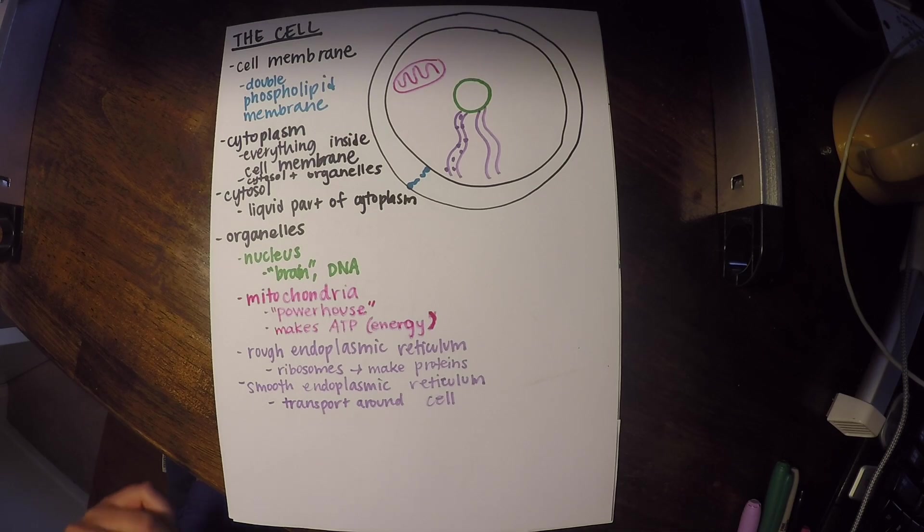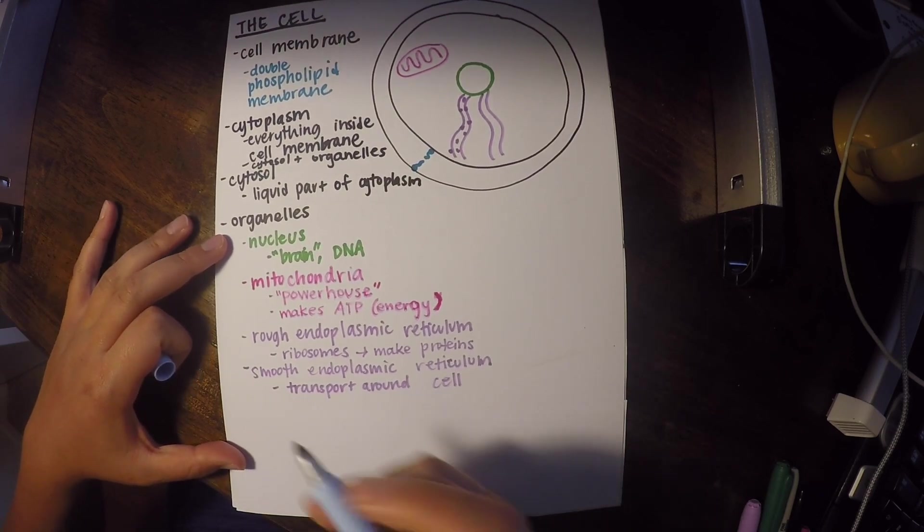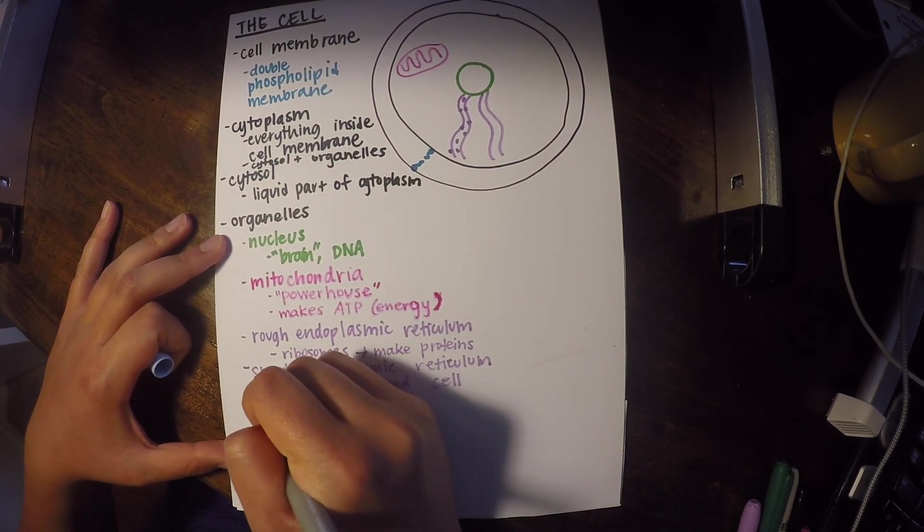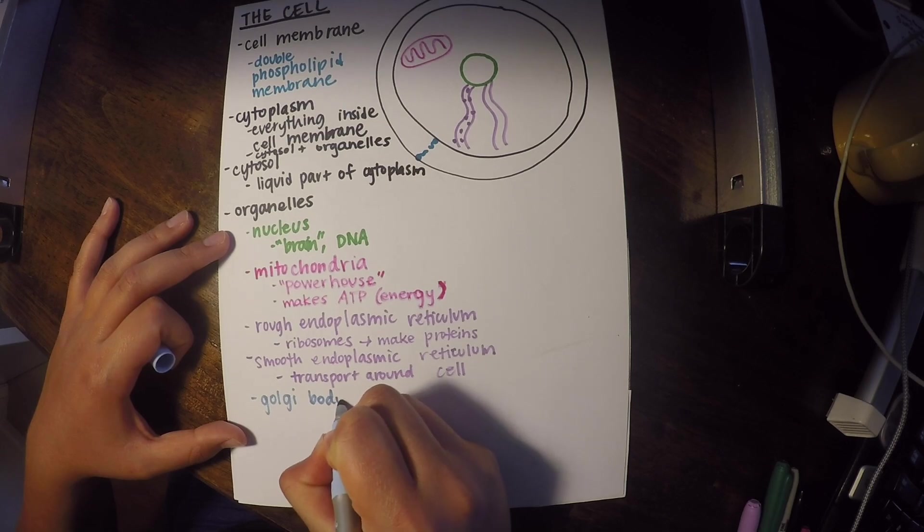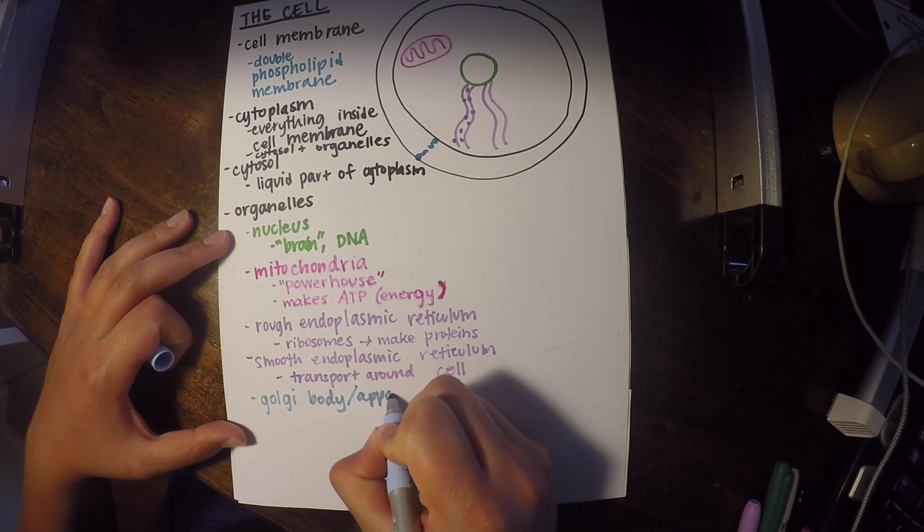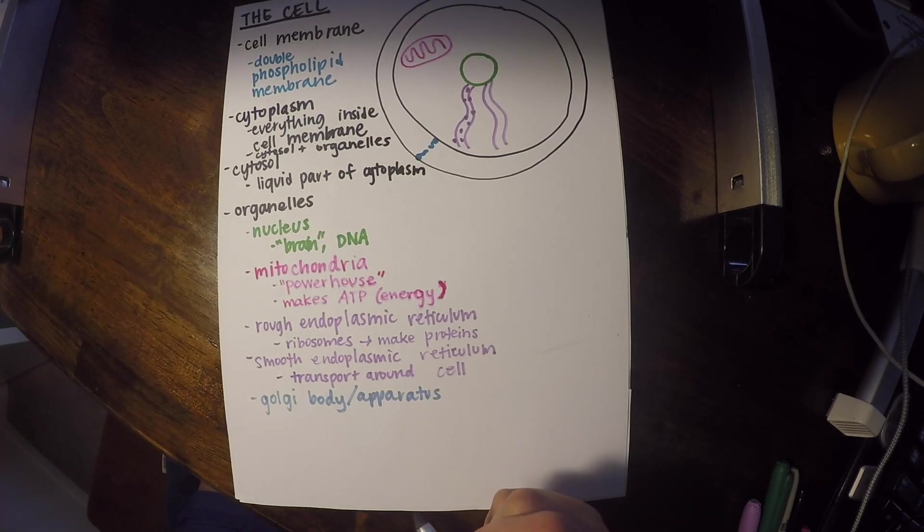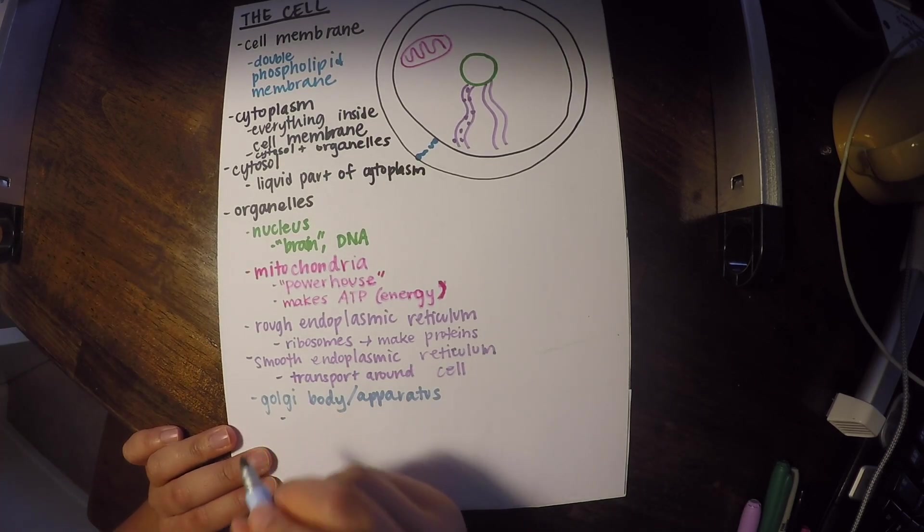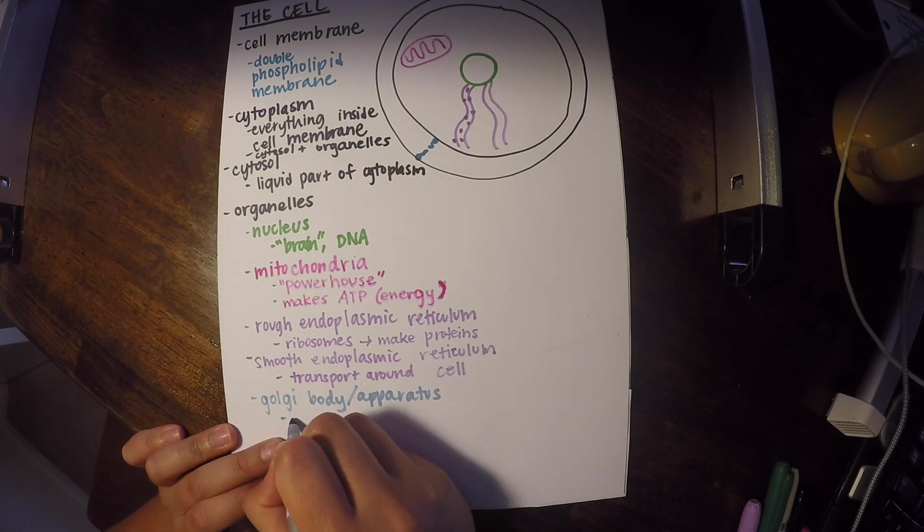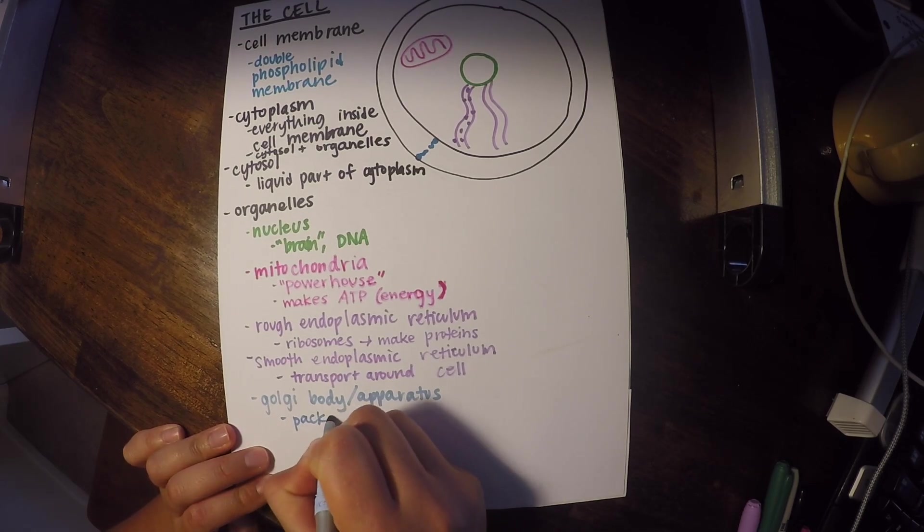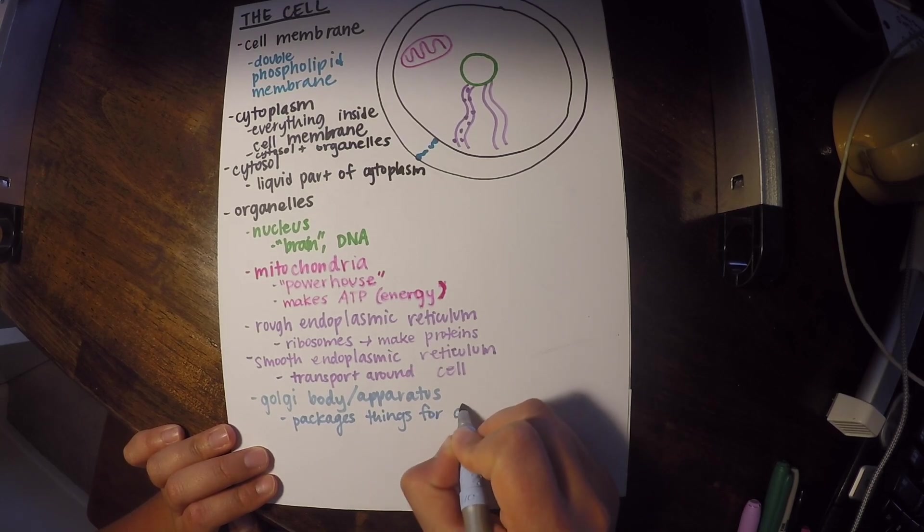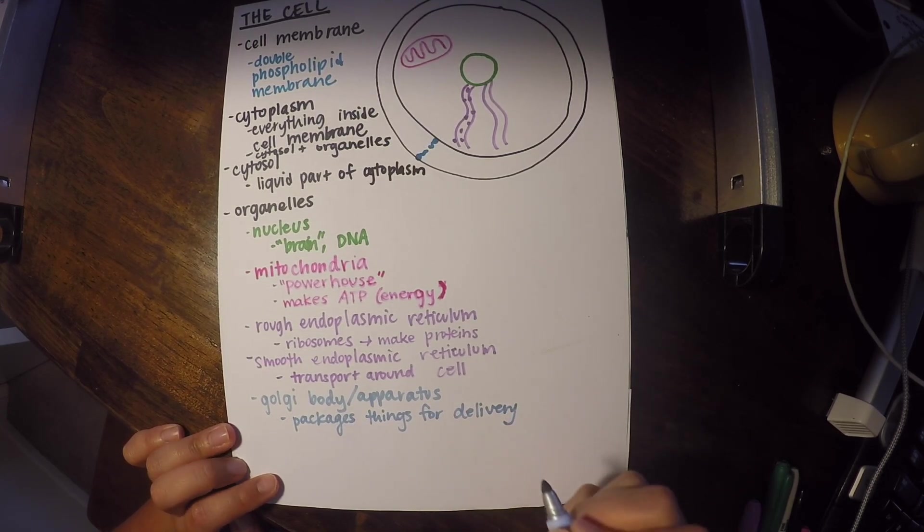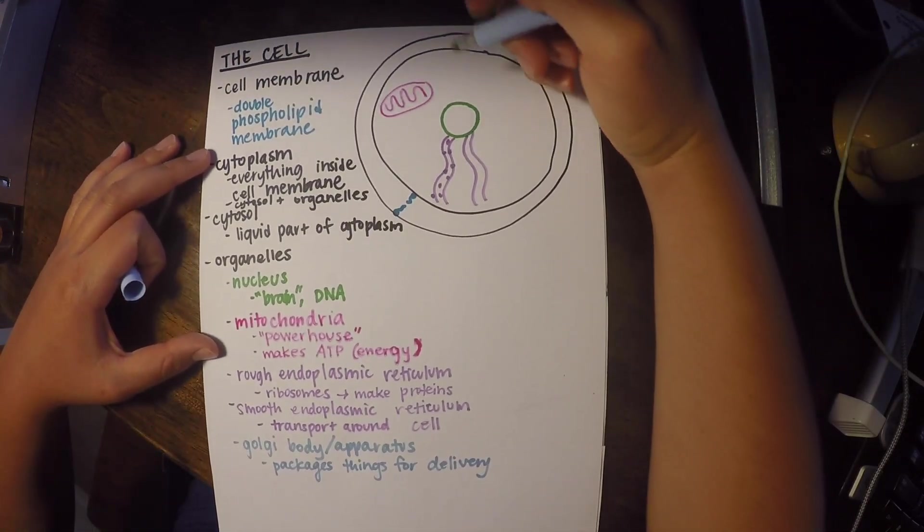Our next organelle is called the Golgi body. And sometimes it's referred to as the Golgi apparatus. And essentially this packages things for delivery around the cell. And we're going to draw it up here.